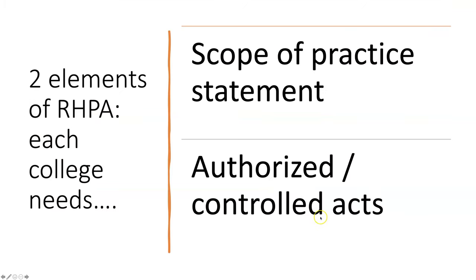There are two elements of the Regulated Health Professions Act: each college needs to have a scope of practice for their professionals, as well as the authorized and controlled acts that each member of their profession are allowed to do.